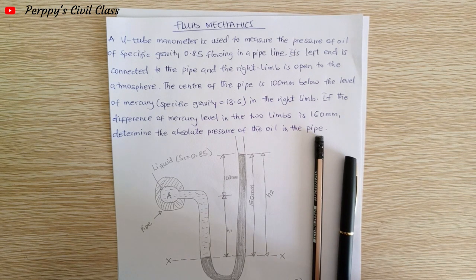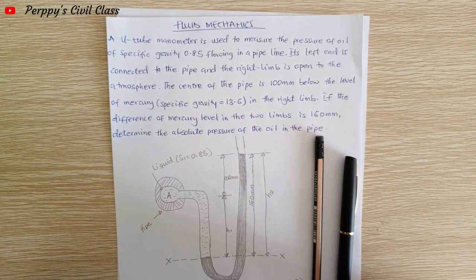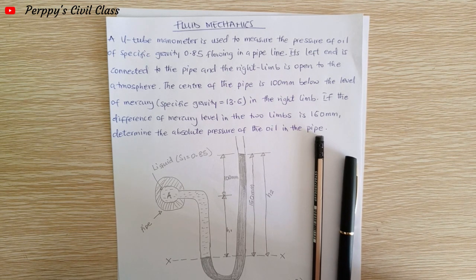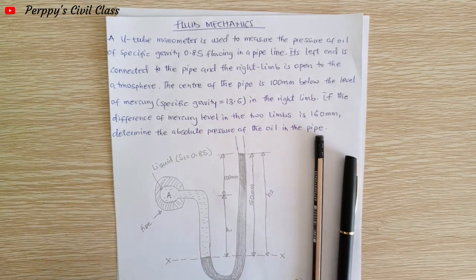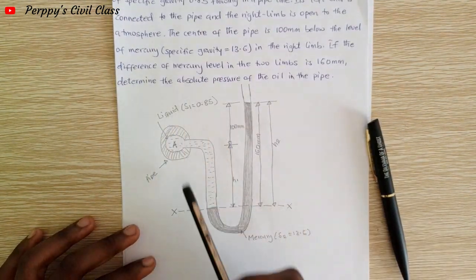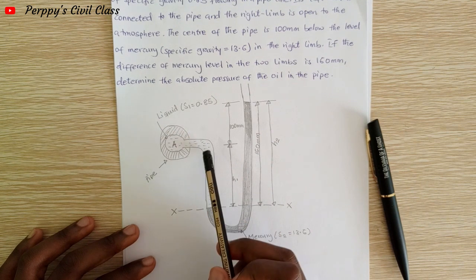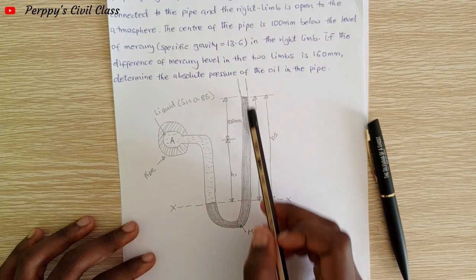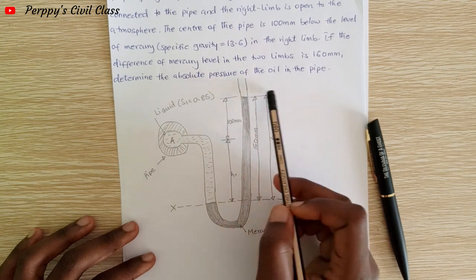A U-tube manometer is used to measure the pressure of oil of specific gravity 0.85 flowing in a pipeline. Its left end is connected to the pipe, and the right limb is open to the atmosphere.